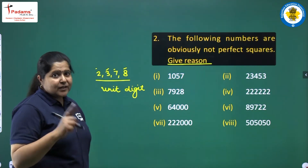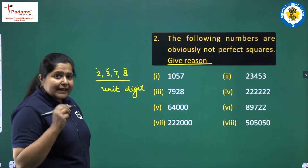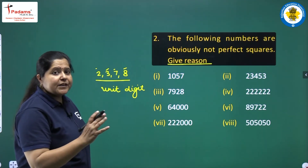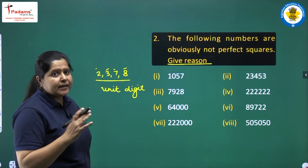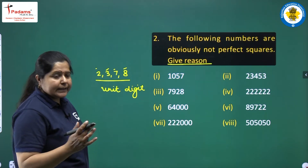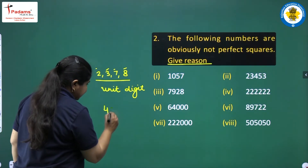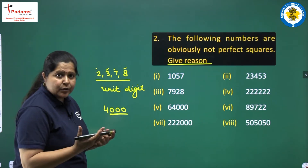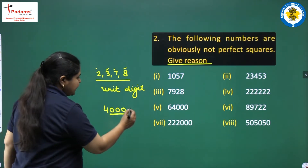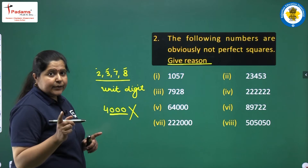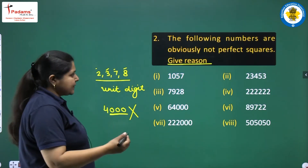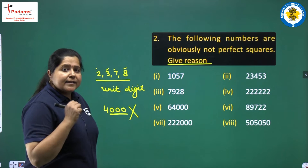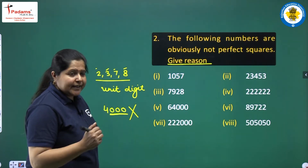A second rule: if a number has an odd number of zeros, then it can never be a square number. For example, 4000 has 3 zeros, which is an odd number of zeros, so it can never be a square number. Applying these rules, we can explain why the given numbers are not square numbers.